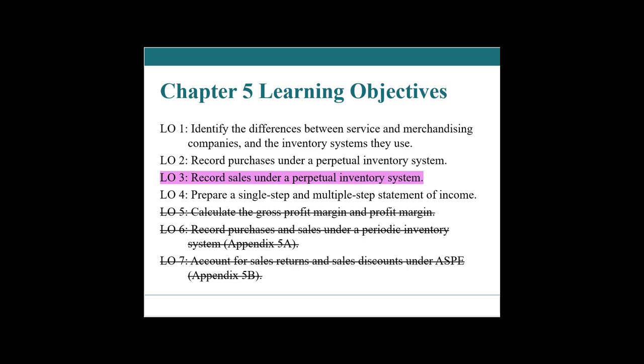Hello, and welcome to chapter five, the third learning objective, where we're going to be talking about recording sales under a perpetual inventory system. You might hear Bambi in the background — she has been particularly talkative today. I think she is seeing all types of squirrels and neighborhood cats that she would like to defend our house from.